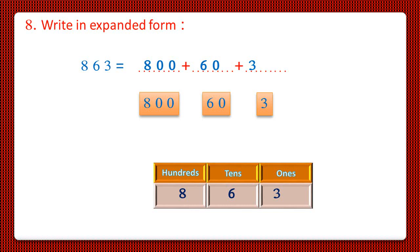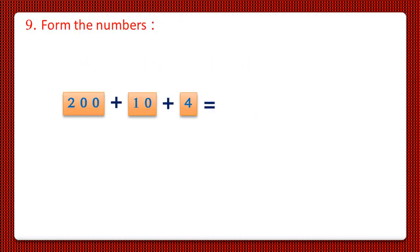Now let us move to question number 9. Form the number 200 plus 10 plus 4. So let us take the 200 man card on which we will put the 10 man card and the 4 man card. So the number becomes 214.